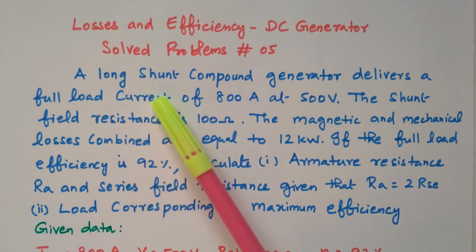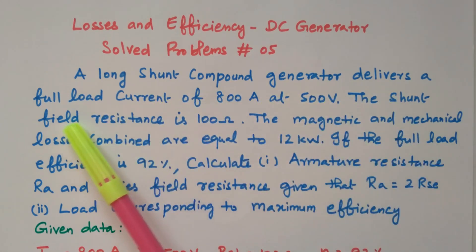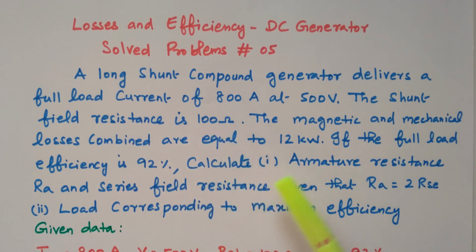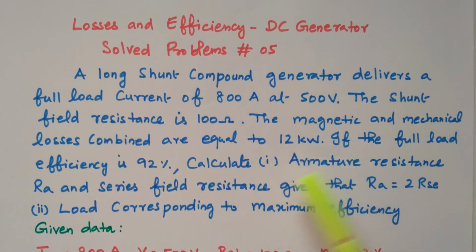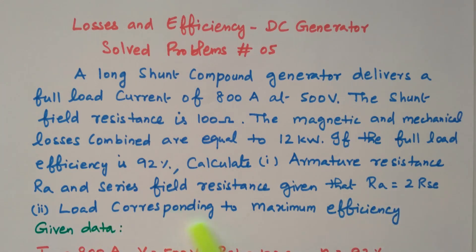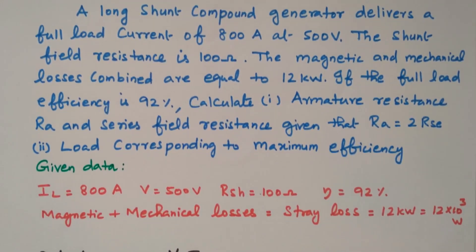Now we will go to the problem. A long shunt compound generator delivers a full load current of 800 ampere at 500 volts. The shunt field resistance is 100 ohm. The magnetic and mechanical losses combined are equal to 12 kilowatt. If the full load efficiency is 92%, calculate: first, armature resistance RA; series field resistance RSC, given that RA = 2·RSC; and the load corresponding to maximum efficiency.